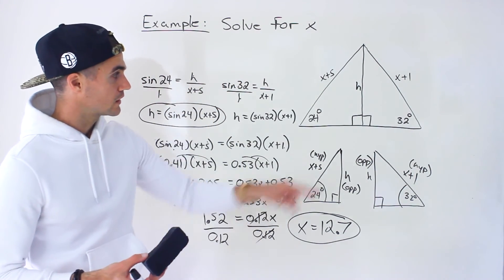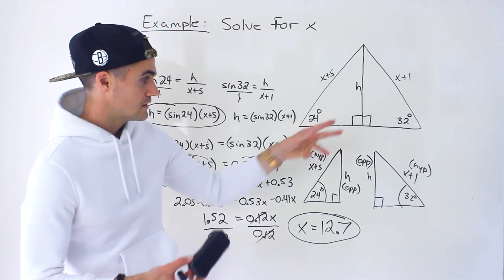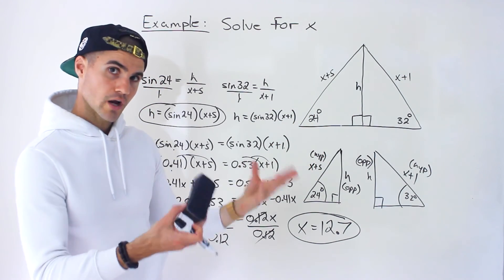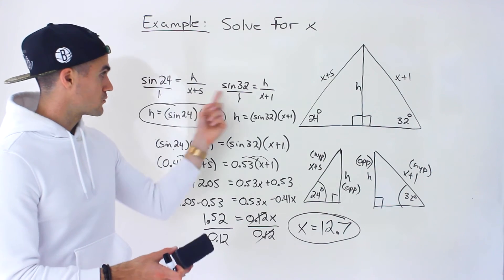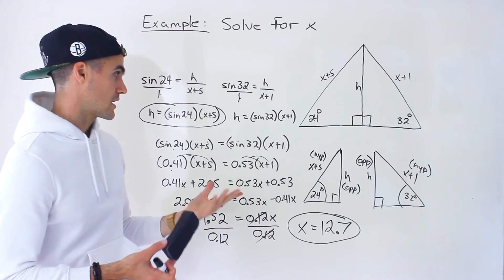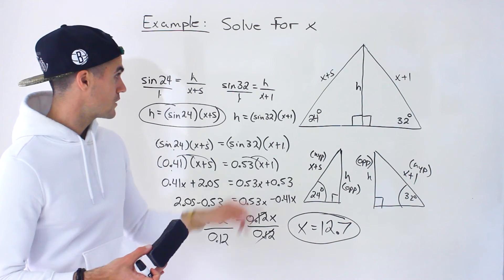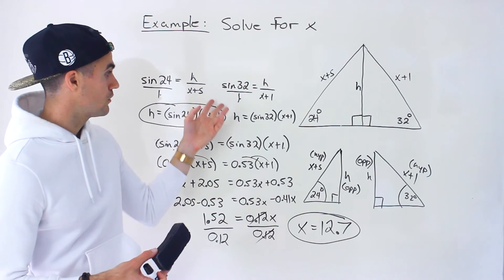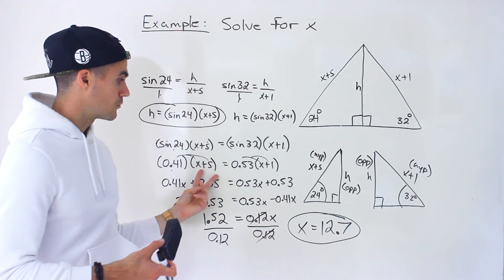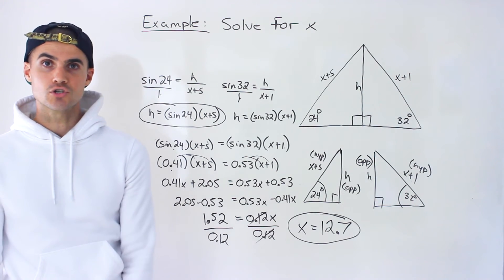So fairly tricky question. What you got to recognize is we got this side that is in both triangles, and then we can create some ratios. We got two equations, two unknowns, and then we just have to solve for that x value. So I isolated for the h in both of these, then made them equal, brought in the decimals, and then just solved the equation.